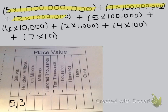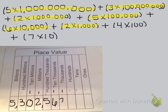Plus 2 times 1 million, so the 2 goes in the millions place. There was nothing times 10 million, so I know I need to put a zero there. Plus 5 times 100,000, so the 5 goes in the hundred thousands. Plus 6 times 10,000. Plus 2 times 1,000. Plus 4 times 100. Plus 7 times 10. And there's nothing times 1, so I put a zero in my ones place. So this was the number 5,302,562,470.